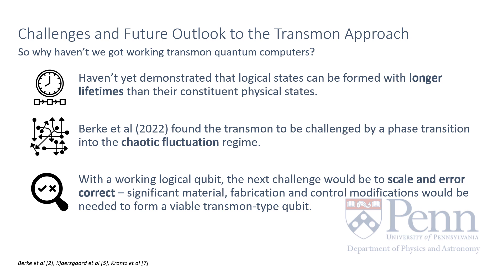So why don't we have working transmon-based quantum computers? We have yet to demonstrate that logical states can be formed with longer lifetimes than their constituent physical states. Transmon qubits were also found to be sensitive to a phase transition in the many-body localization, or MBL, regime in which these states can enter chaotic fluctuation. Looking forward, with a functioning logical qubit that has a relevant decoherence time, the next step would certainly be to scale the system and sufficiently implement error correction. This will take significant advances in materials, fabrication, and control, but is currently at the forefront of what industry and academia are both trying to achieve.